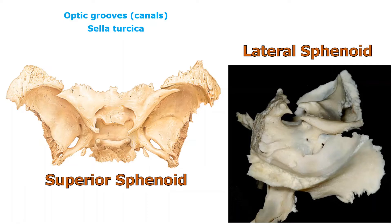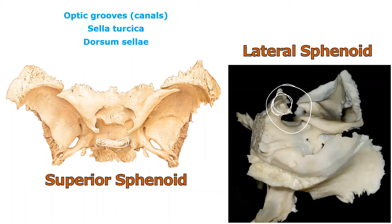The pituitary gland is very important and we want to keep it protected in a little bony saddle. So the entire structure is called a sella turcica. It does have different piece parts. The dorsum sellae is the back of the saddle — it's this bony ridge right on the back. Dorsum meaning back, sellae meaning saddle. So the whole thing is called a sella turcica, but the bony back part is called the dorsum sellae.